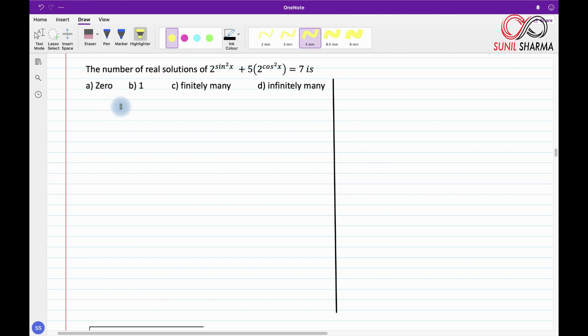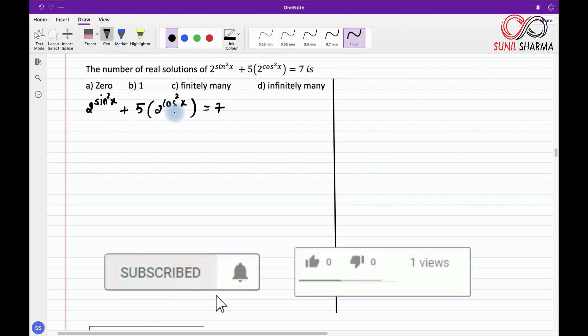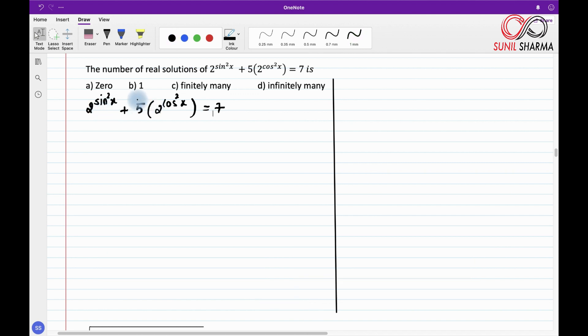So starting with, let's write down the equation very quickly. Now first, whenever you have a question in sin and cos, either you convert everything into sin or you convert everything into cos. We know this identity: sin²x + cos²x = 1. So what I am going to do is convert this cos²x into sin²x. From here, if I take sin²x on the other side, what we get is cos²x = 1 - sin²x.